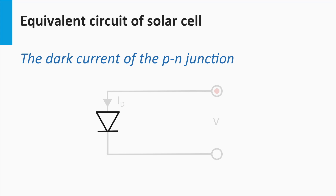The diode symbol is a triangle with a line on top of its vertex. The triangle points in the direction in which the diode allows an electrical current to flow under a forward bias condition. In the opposite direction the diode blocks the current.